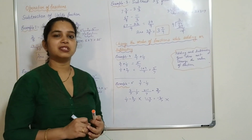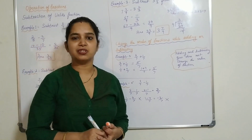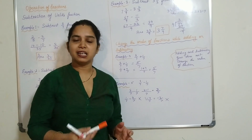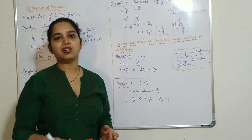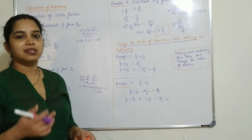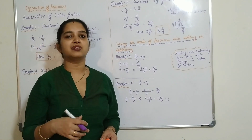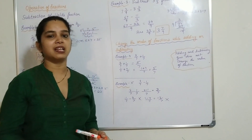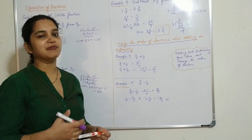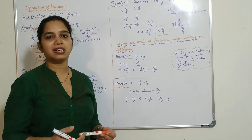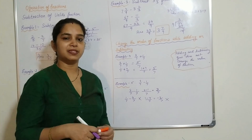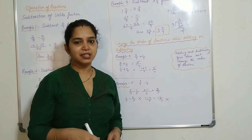So today we studied about the subtraction of unlike fractions — how to subtract unlike fractions and how it is done with mixed fractions. Mixed fractions should be converted into improper fractions first, then the LCM can be found and we can subtract the smaller from the larger. I hope it is clear. Thank you.